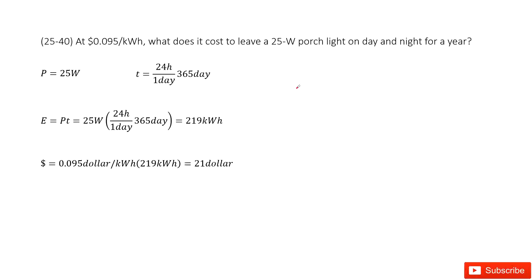There you can see we know the electric price is 0.095 dollars per kilowatt hour. It asks you how much does it cost to leave a 25-watt light on day and night for a year.